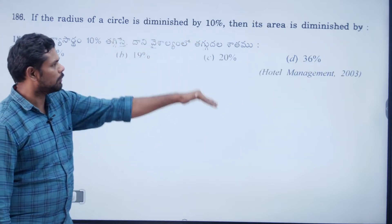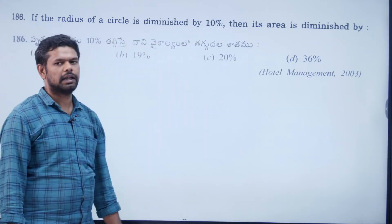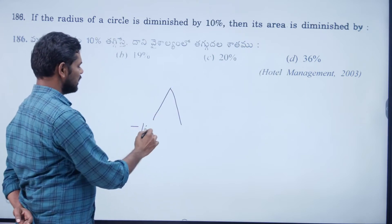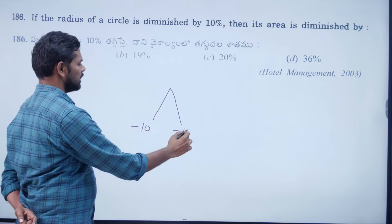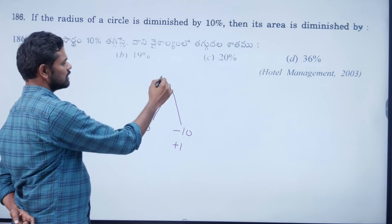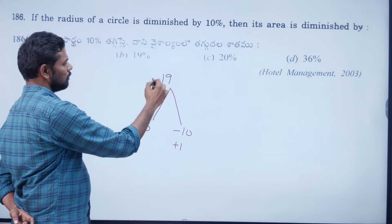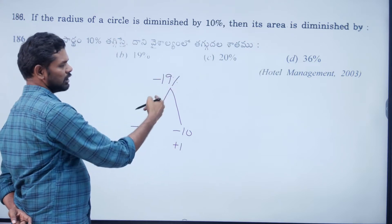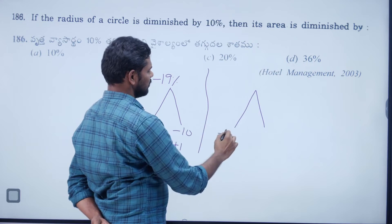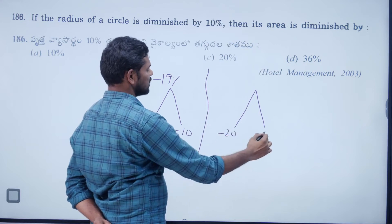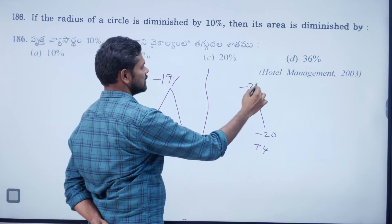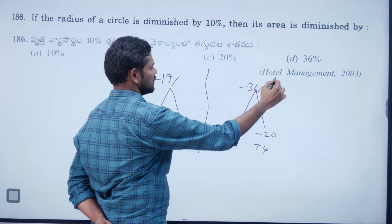Radius of a circle is diminished by 10%. The area is diminished by: −10 − 10 + (10×10)/100 = −20 + 1 = −19%. So area decreases by 19%. If 20% decrease: −20 − 20 + 4 = −36% overall change.